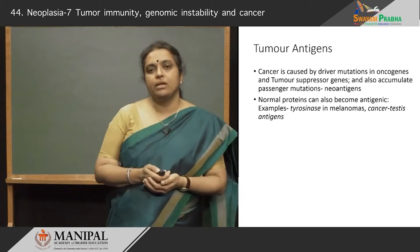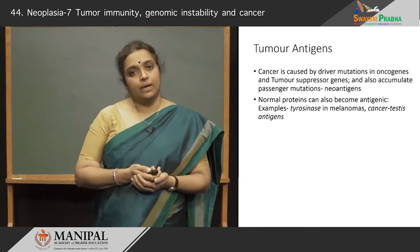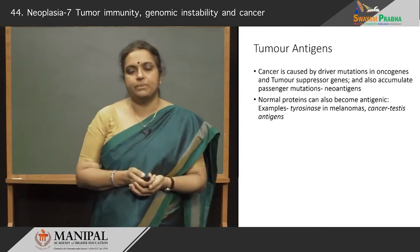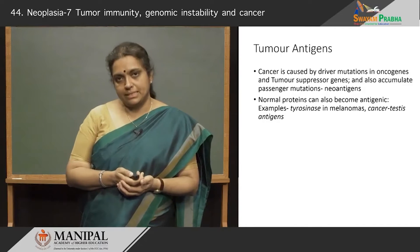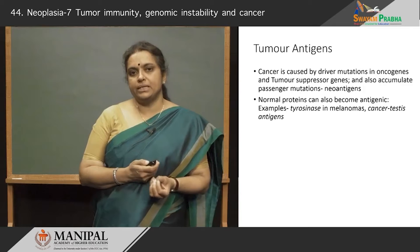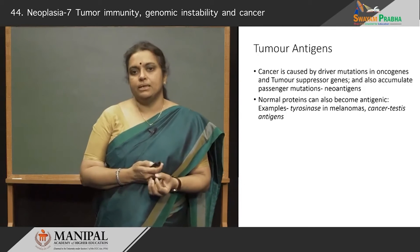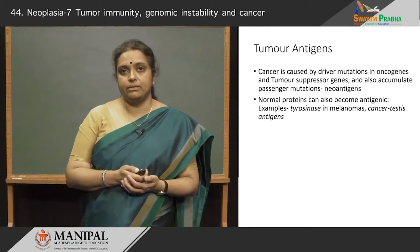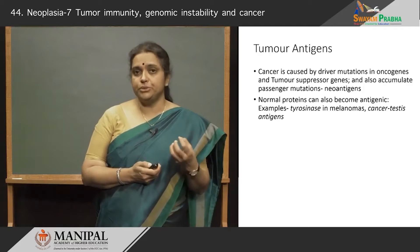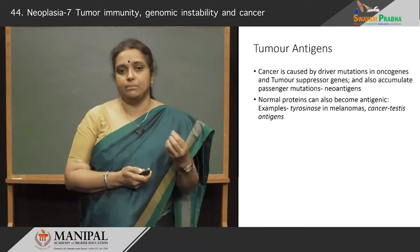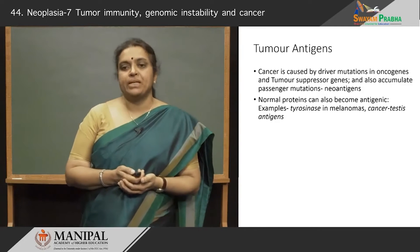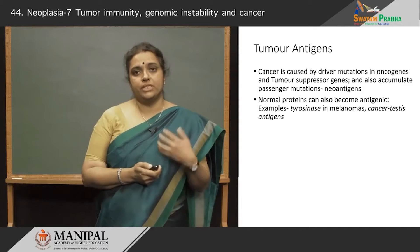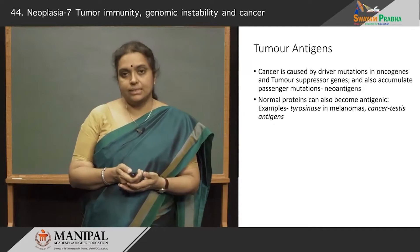What are these tumor antigens? Cancer cells acquire many genetic alterations; there are many driver mutations in oncogenes and tumor suppressor genes that accumulate within cancer cells, and these produce new antigens of the tumor cells. Sometimes normal proteins can also become antigenic in tumors because in a tumor these antigens are produced in increased numbers — examples being tyrosinase in melanomas and cancer-testis antigens in testicular tumors.